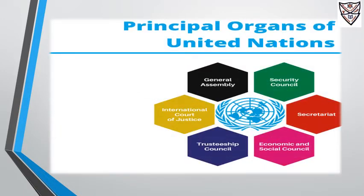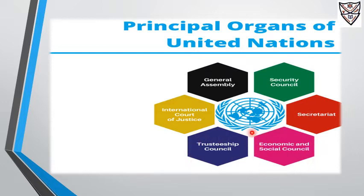The UN has six major bodies which function under it: the General Assembly, the Security Council, the Secretariat, the Economic and Social Council, the Trusteeship Council, and the International Court of Justice.